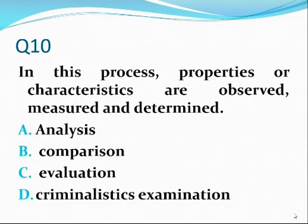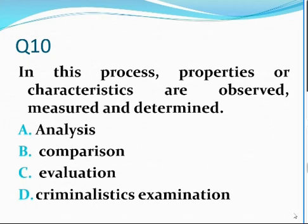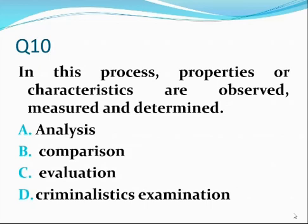Question number ten. In this process, properties or characteristics are observed and measured and determined. Analysis, comparison, evaluation. The acronym here is ACE. That is the process of criminalistic examination: analysis, comparison, and evaluation. When you say comparison, you compare the standard document with the questioned document.